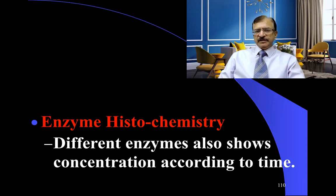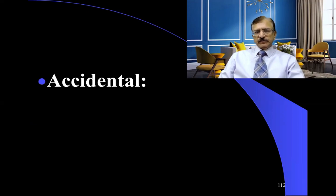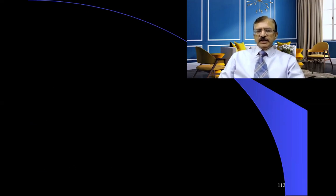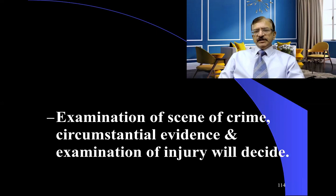The manner of infliction — it is accidental, homicidal, or suicidal — but usually lacerations are accidental and homicidal. Self-inflicted lacerations are not seen. Examination of the scene of crime, circumstantial evidence, and examination of the injury will decide the manner of infliction.